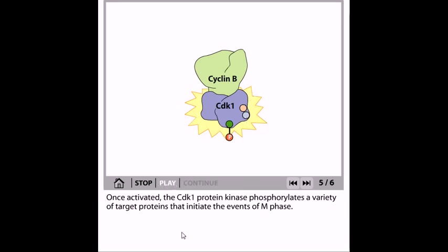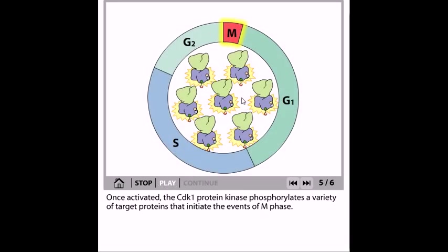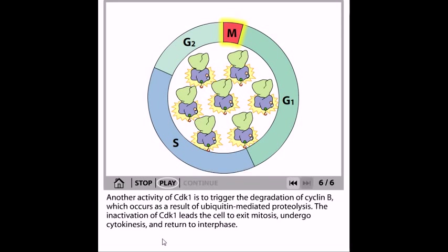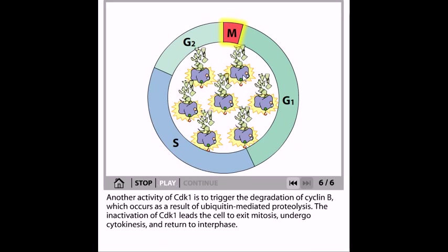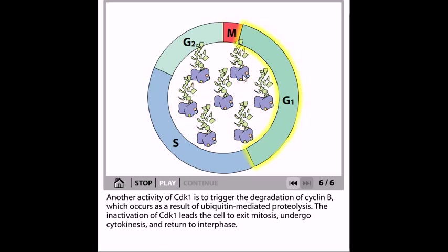Once activated, the CDK1 protein kinase phosphorylates a variety of target proteins inside the cell and initiates the events of the M phase or the mitotic phase. Another activity of CDK1 is to trigger the degradation of cyclin B, which occurs as a result of ubiquitination-mediated proteolysis.